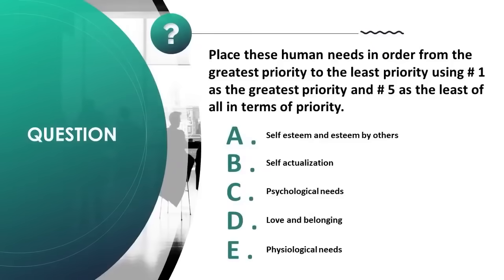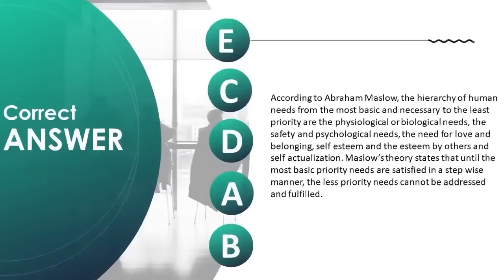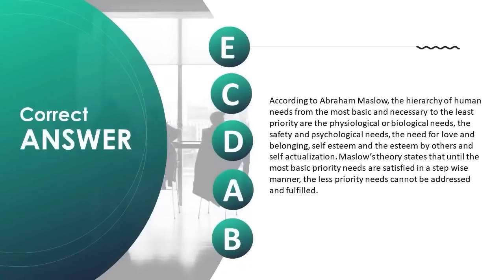Place human needs in order from greatest to least priority: A) self-esteem and esteem by others, B) self-actualization, C) psychological needs, D) love and belonging, E) physiological needs. Correct answer is E, C, D, A, B. According to Abraham Maslow, the hierarchy from most basic to least priority: physiological needs, safety and psychological needs, love and belonging, self-esteem, and self-actualization.